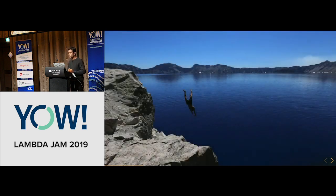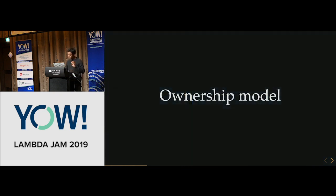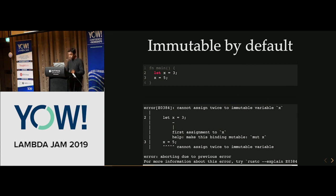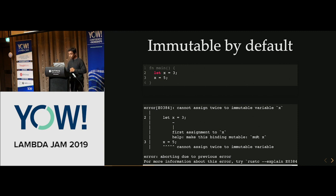Let's now dive into some Rust code. First, let's start with the ownership model — you need to understand a little bit about this before we go into functional language features. In Rust, variables are immutable by default. If you define a variable and try to reassign a value to it, the compiler will throw an error. Rust has one of the best compiler errors around — Elm is the only other language I've seen with good compiler errors. It clearly tells you what the problem is and gives you a suggestion on how to fix it.